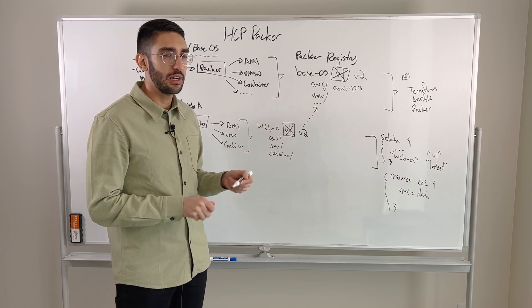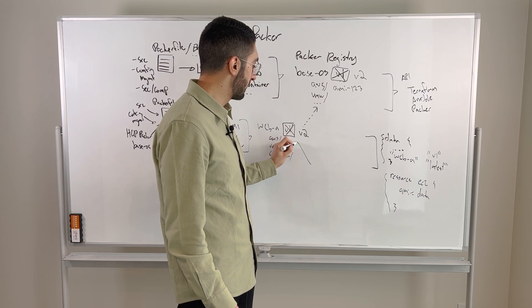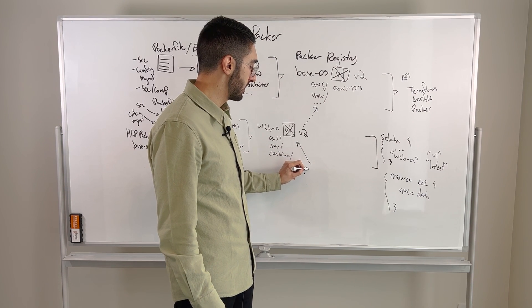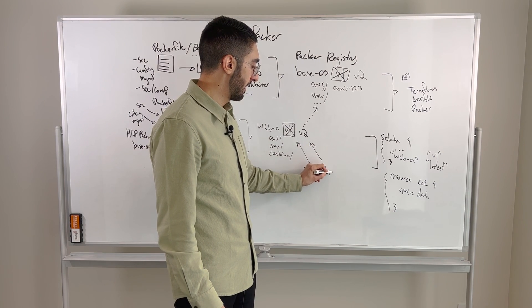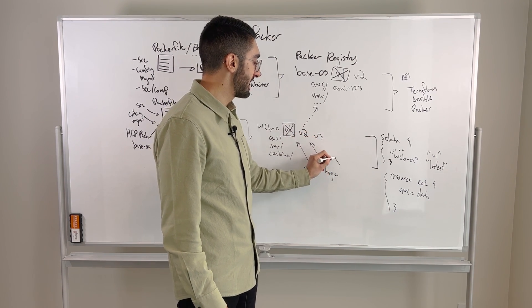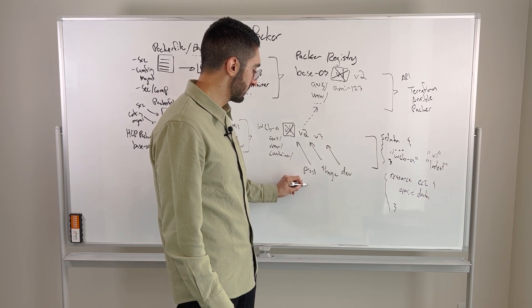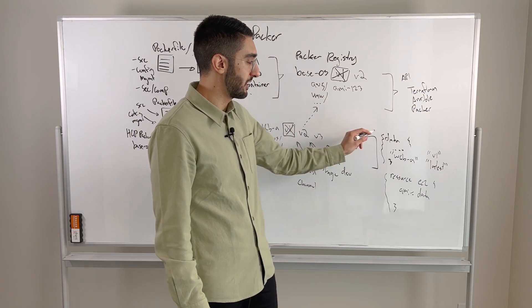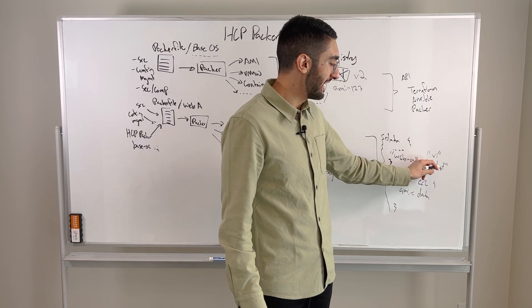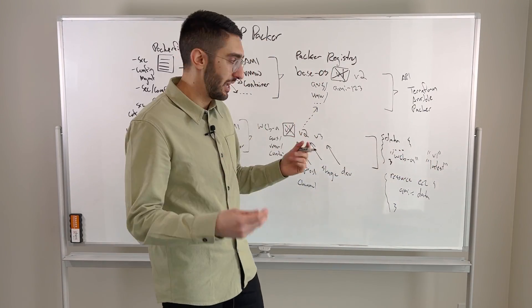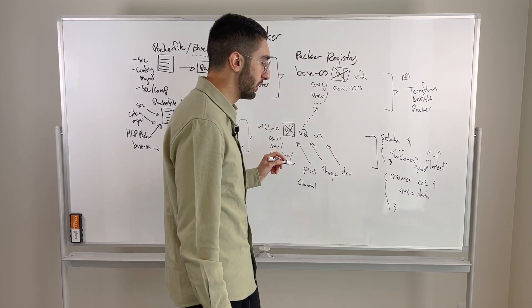Now the final piece that we didn't talk about is you can also introduce the notion of release channels. So you might actually be able to say, I'm going to create a pointer to my V1. That might be my production stable image. V2 might be what I'm using in stage. And then as I deploy a V3, maybe I have a dev channel as well. So this ability to then define channels lets you get a little bit more intelligent when we talk about sourcing those inputs from the Terraform side. So you might say, I want the latest version of the image, but I don't want the latest of any channel. I only want the latest for my production channel.